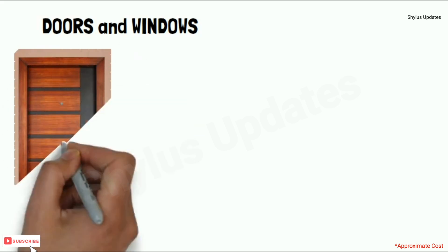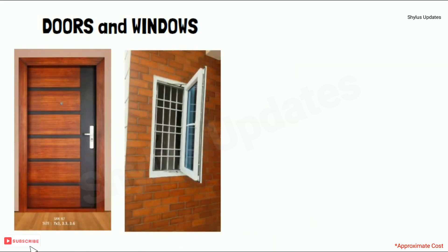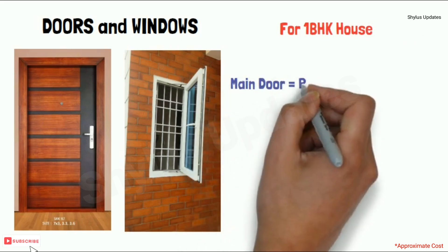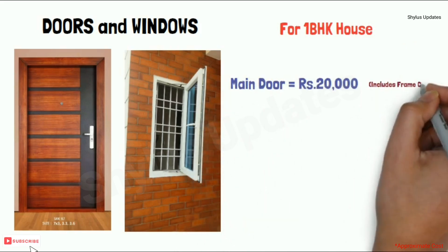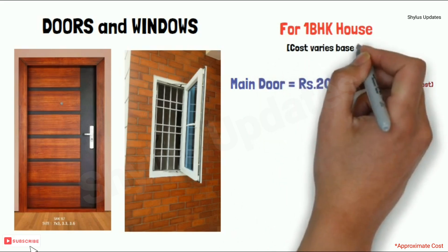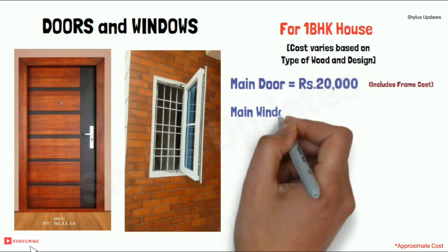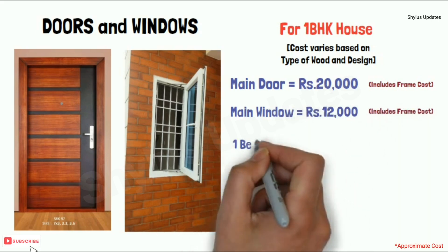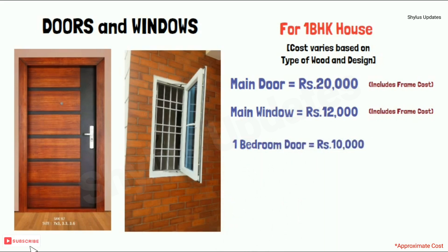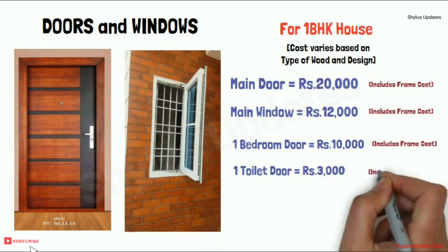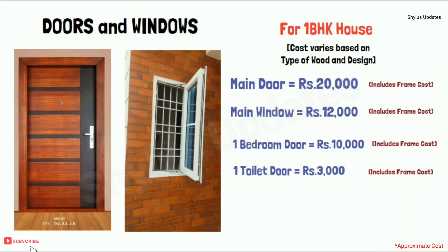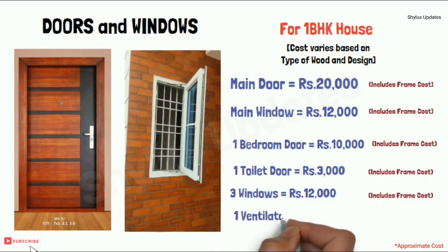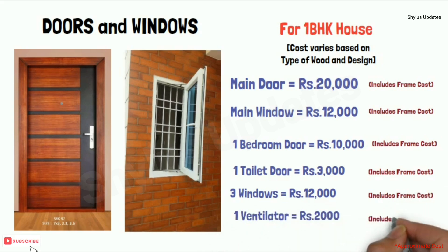For a one BHK house: main door costs rupees 20,000 including frame cost — varies based on type of wood and design. Main window rupees 12,000 including frame. One bedroom door rupees 10,000 including frame. One toilet door rupees 3,000. Three windows rupees 12,000. One ventilator rupees 2,000 — all including frame cost.